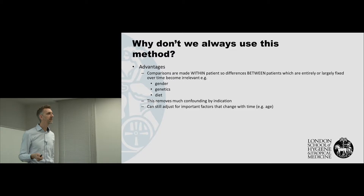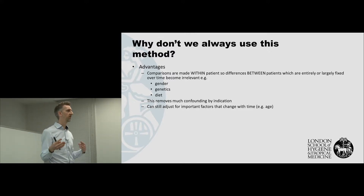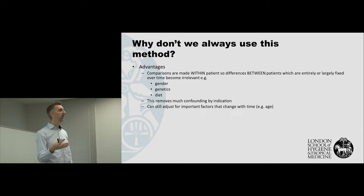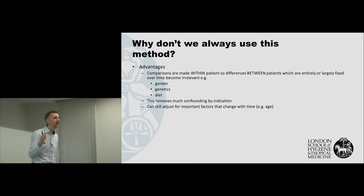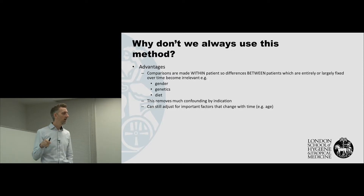So why don't we always use this method? If it means that we can forget about between-person differences, surely we should be using it more. Because we're making these comparisons within patients, the between-patient differences become irrelevant — that includes things we can measure like gender and smoking status, but also things we can't measure like genetics, diet, or exercise, which will often not change much over an observation period. So it can remove a lot of confounding by indication.